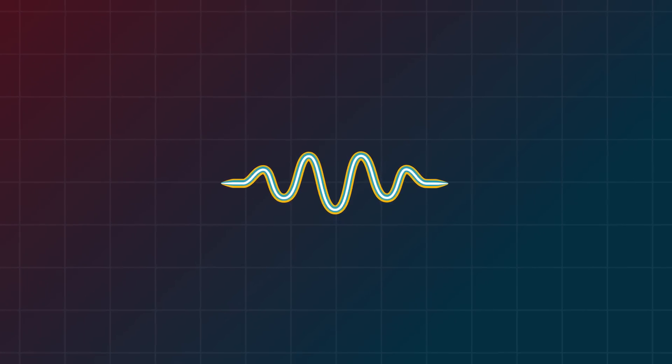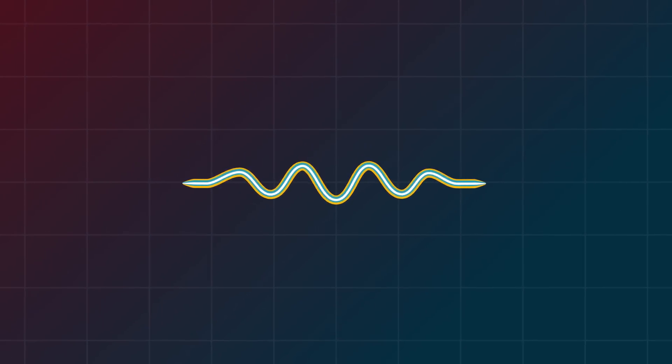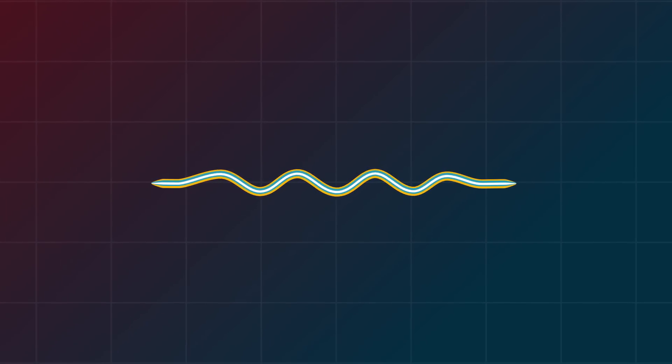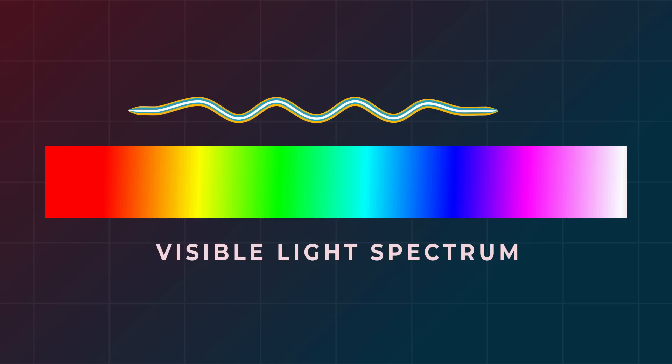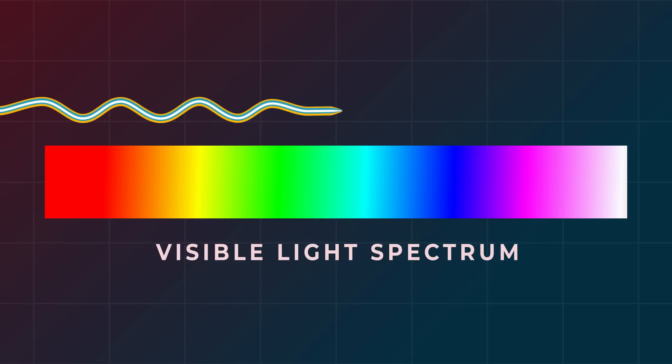As spacetime expands, the wave packet stretches out, like a piece of string pulled tighter. The wavelength gets longer. If it was a light wave, it would move towards the red end of the visible spectrum, thus redshift.